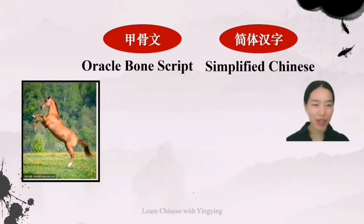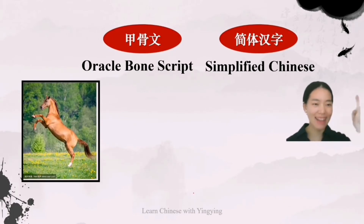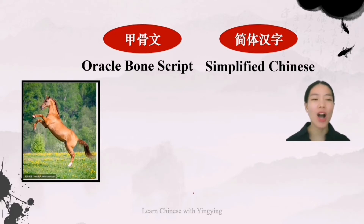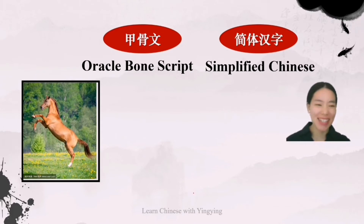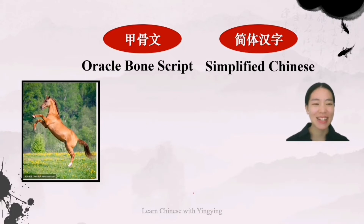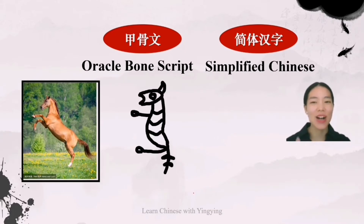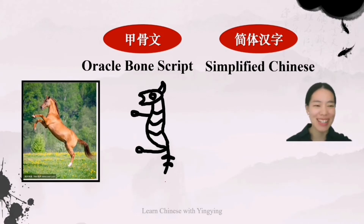The third word we are going to learn is 马 (mǎ). It means horse. How would you sketch it? I know it's a little bit tricky, but I believe you can do it. If you are done, let's look at the oracle bone script. This is quite a truthful sketch of the picture, isn't it?